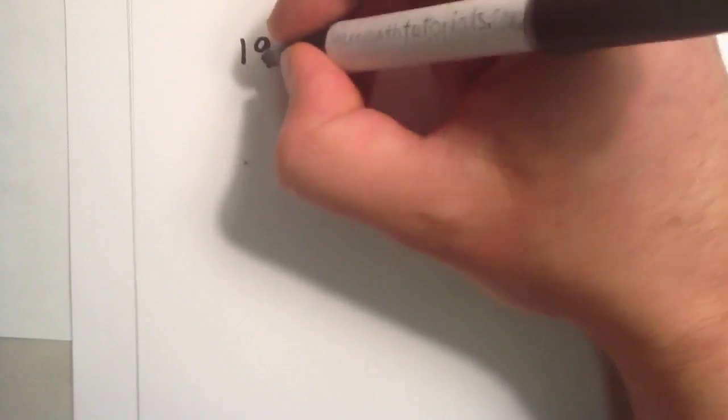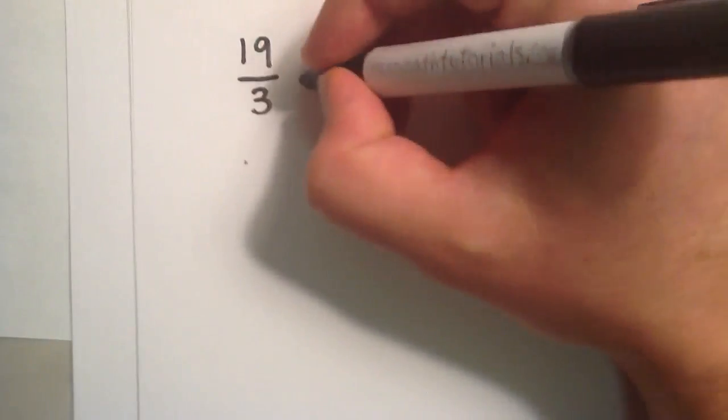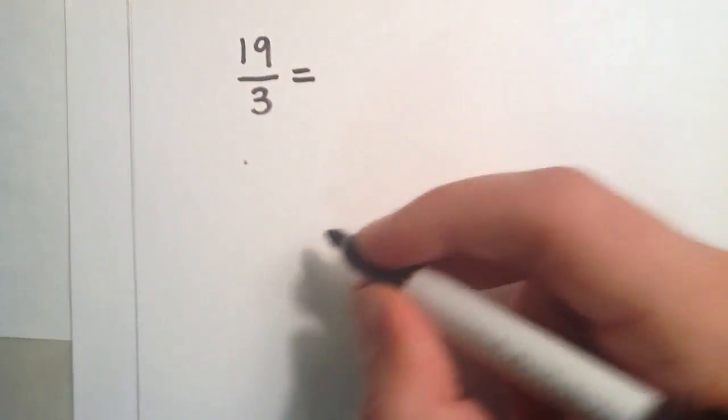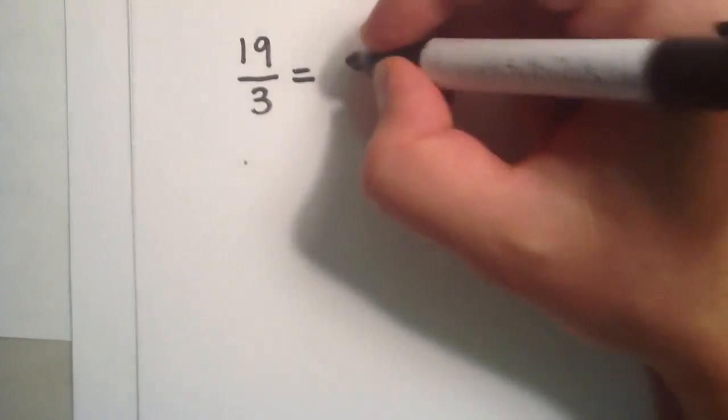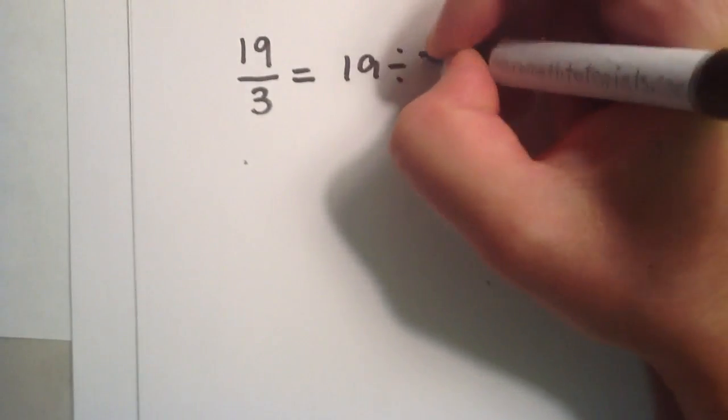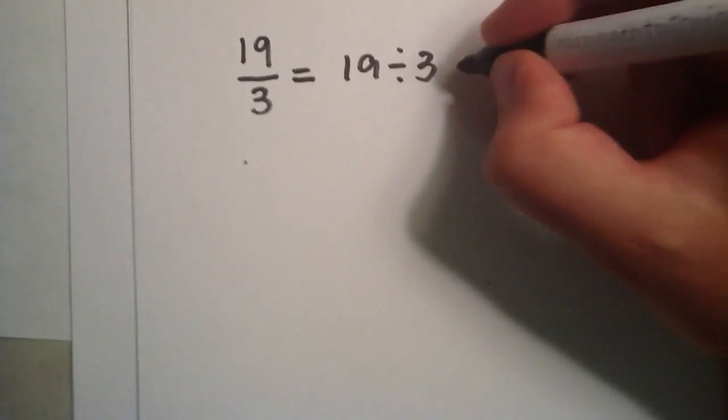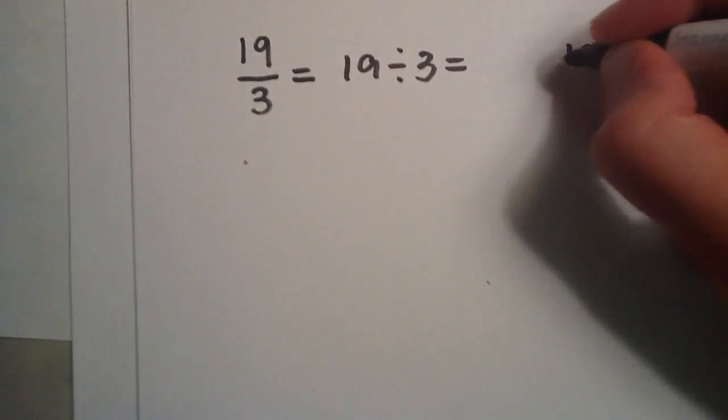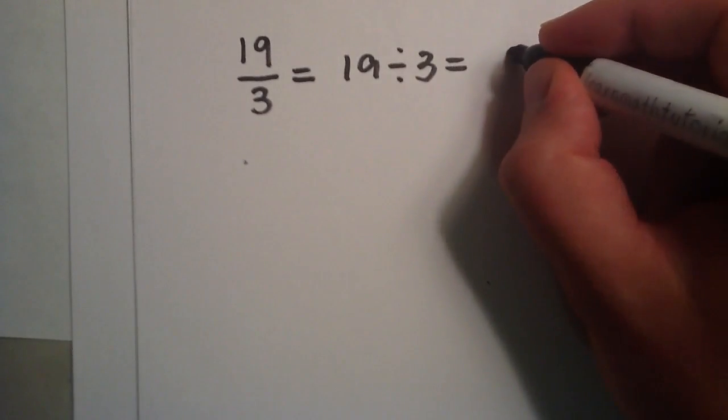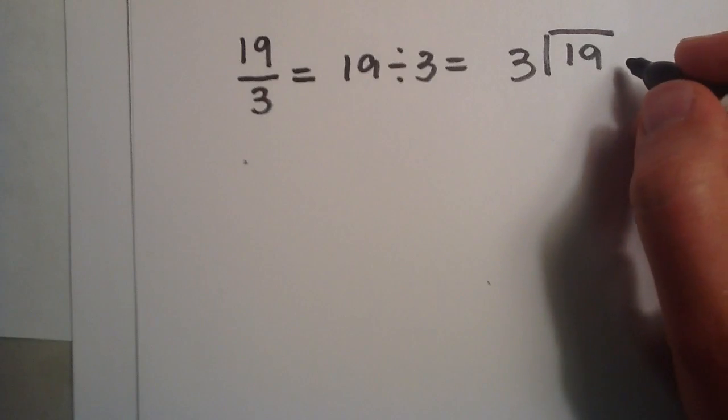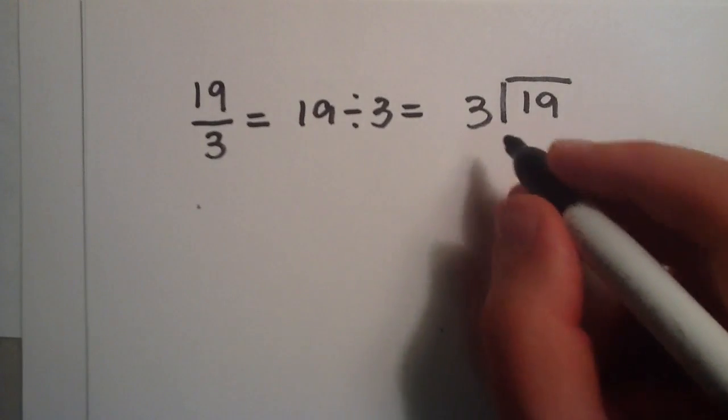Okay, what if we start with an improper fraction? Let's say we start with 19 divided by 3. 19 over 3 is really just a division problem, 19 divided by 3. And that's really the same thing as we know from elementary school, is 19 divided by 3 this way. So now we just treat it like a division problem.